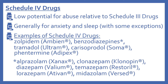Now schedule four drugs. These have a low potential for abuse relative to schedule three drugs. Generally you can think of schedule four drugs as being for anxiety and sleep, with some exceptions. Some schedule four drugs include zolpidem (Ambien), which is for sleep. The benzodiazepines, which are generally for anxiety or sleep, include alprazolam (Xanax), clonazepam (Klonopin), diazepam (Valium), temazepam (Restoril), lorazepam (Ativan), and midazolam (Versed).